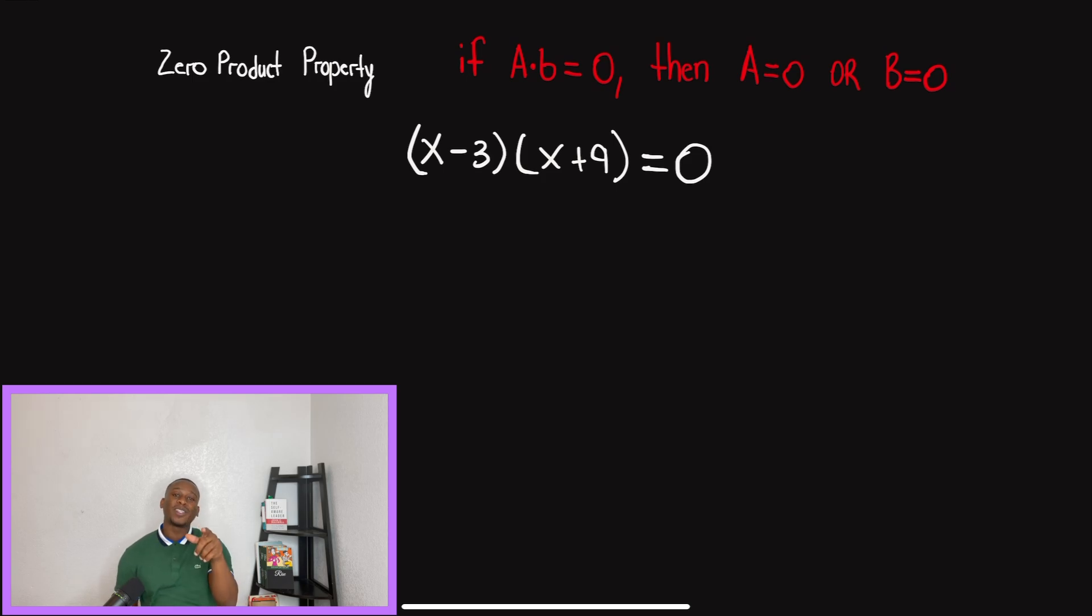What's good everybody? Today's video, we're talking about the zero product property. I'm going to explain to you guys what that is and how to use it. So zero product property is saying that if A times B is equal to zero, then A or B must be zero, guys.